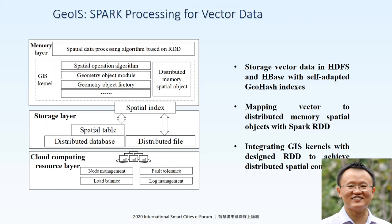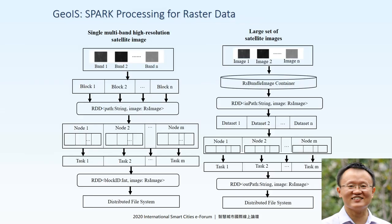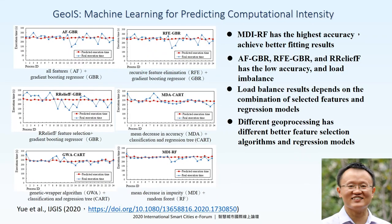For raster data, we can also develop an image RDD in Spark. This can be divided into two approaches: one is about a single image, the other one is about a large set of small satellite images. We have heard the first presentation talk about GeoAI. Usually when we talk about GeoAI, most people are focusing on how AI technology can change GIS — like machine learning or other AI technology improving geospatial analytics or imaging analysis.